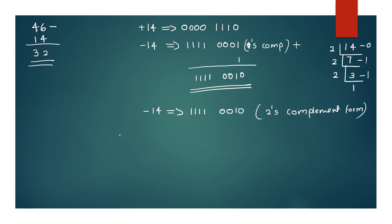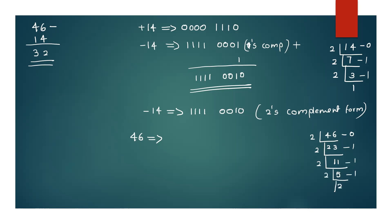Now, what is the binary value of 46? Converting 46 to binary: 46 divided by 2 gives 23 remainder 0; 23 divided by 2 gives 11 remainder 1; 11 divided by 2 gives 5 remainder 1; 5 divided by 2 gives 2 remainder 1; 2 divided by 2 gives 1 remainder 0; 1 divided by 2 gives 0 remainder 1. So 46 in binary is 00101110.